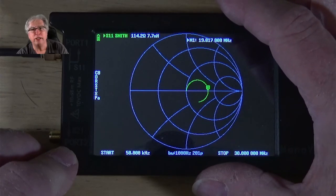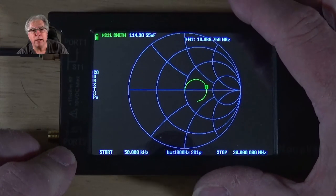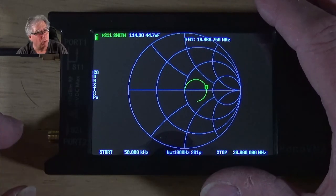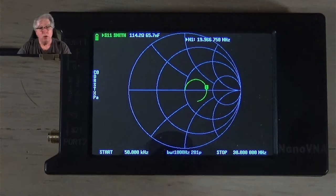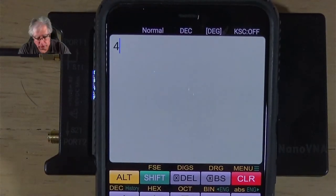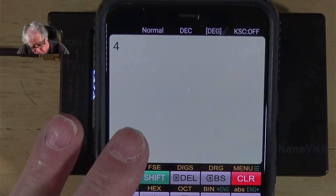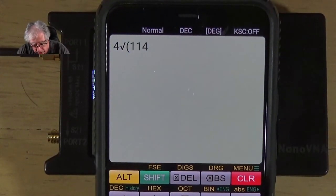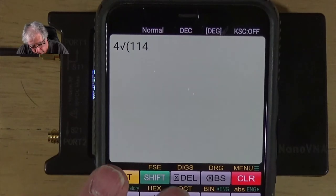1, 1, 4, dot 2. And then we'll pop forward, and it's 1, 1, 4, dot 3. So, I'm going to call it 1, 1, 4. We're going to use our same calculation, which is going to be the square root of our reading, which is 1, 1, 4, times the load that we put on the end of the coax, which is 50 ohms.